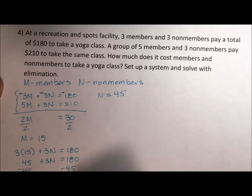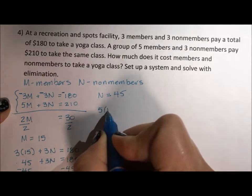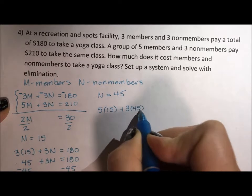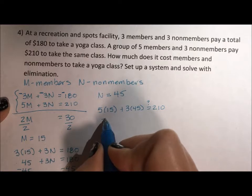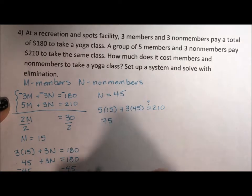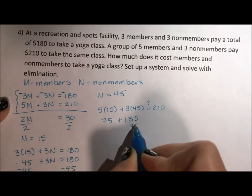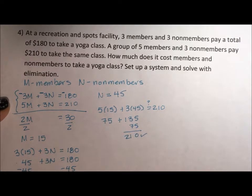All right, so I have my answers. And I know this works in the first equation because I used the first equation to get it. But I really want to check with the second. So is 5 times 15 plus 3 times 45 really equal to 210? 5 times 15 is 75. 3 times 45 is 135. If we add these together, we get $210. And now I'm pretty convinced that I did my math correctly.